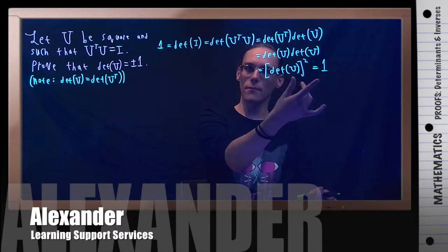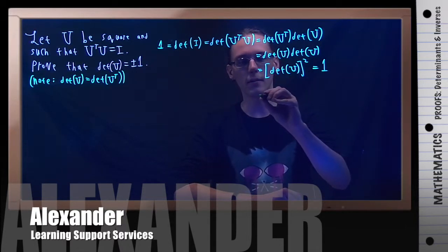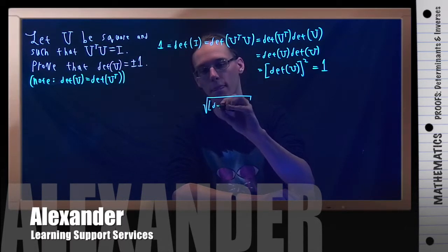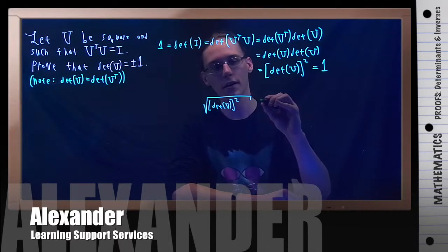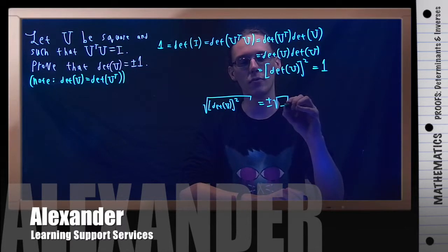How do I get rid of a square? I take the square root. If I square root both sides, I have the square root of the determinant of U squared equals plus or minus the square root of 1.